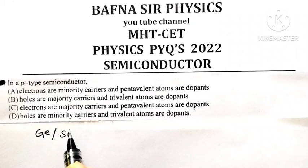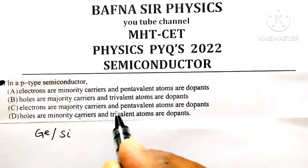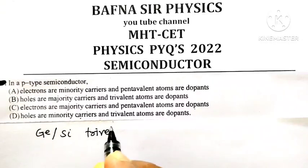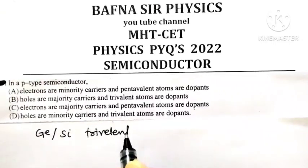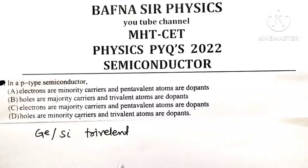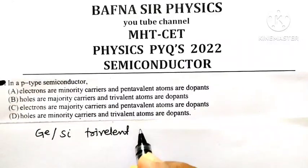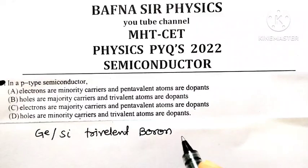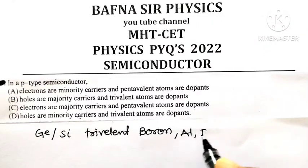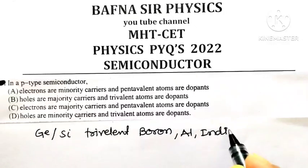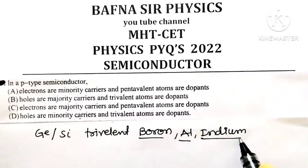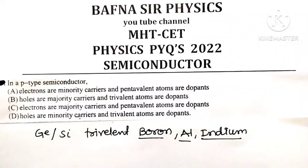To these crystals, when impurity atoms belonging to a third group of periodic table known as trivalent impurity, for example, boron, aluminium or indium, when few atoms belonging to either boron, aluminium or indium are added as an impurity to germanium or silicon,